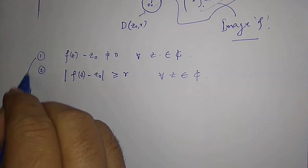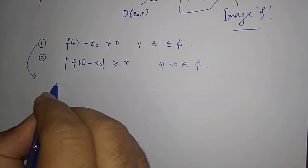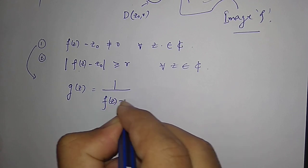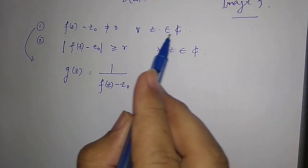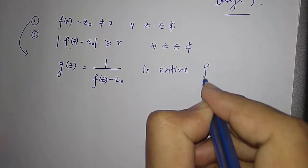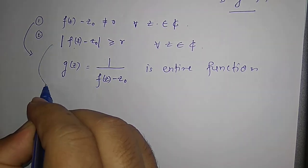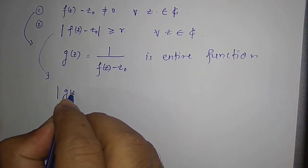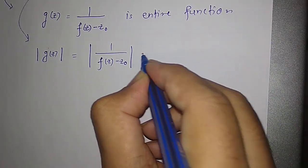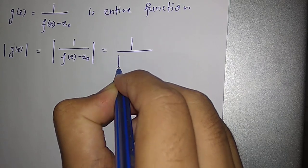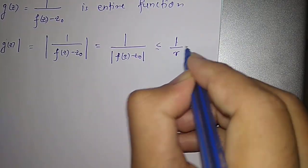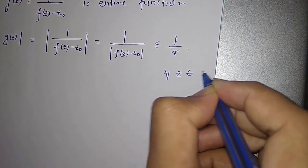The first condition lets us define a new function g(z) = 1 / (f(z) − z0). Since the denominator is non-zero for all z, this makes sense, and g(z) is an entire function. From the second condition, the modulus of g(z) equals the modulus of 1 / (f(z) − z0), which is less than or equal to 1/r for all z in ℂ.